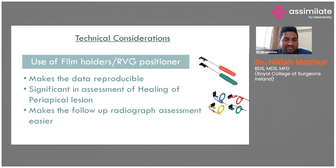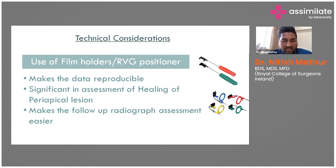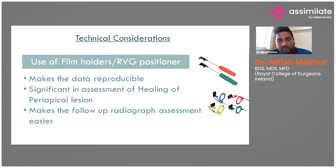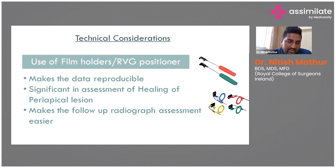This becomes very significant when it comes to the assessment of periapical lesion healing. Sometimes you might say you did a good root canal and after a year take another X-ray and find the lesion is still there or only partially healed — but you can't comment on that healing if you haven't used an RPG positional or film holder. That means you cannot predict the success and failure of RCT in periapical pathology cases without film holders and positionals.